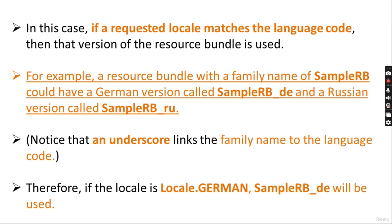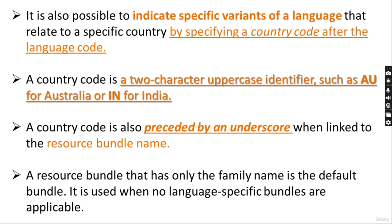So if a requested locale matches that particular language code, which is two characters long, then that version of the resource bundle is used. An underscore links the family name to the language code. If the locale is Locale.GERMAN, SampleRB_DE will be used. It is also possible to indicate specific variants of a language that relate to a specific country by specifying the country code after the language code.